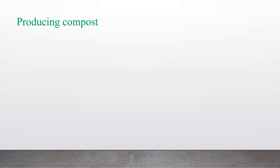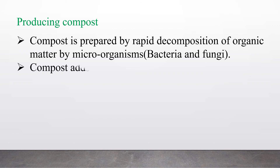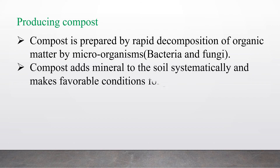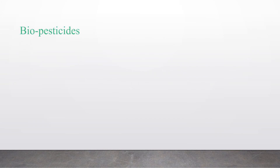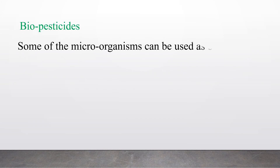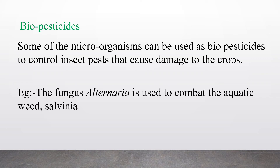The next application is producing compost. Compost is prepared by the rapid decomposition of organic matter by microorganisms such as bacteria and fungi. Compost adds minerals to the soil and makes favourable conditions for plants to grow. Another application is biopesticides — some microorganisms can be used as biopesticides to control insect pests that cause damage to crops. For example, the fungus Alternaria is used to combat the aquatic weed Salvinia.